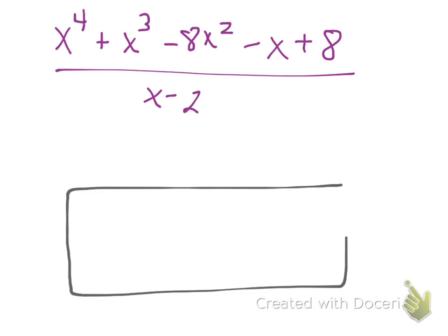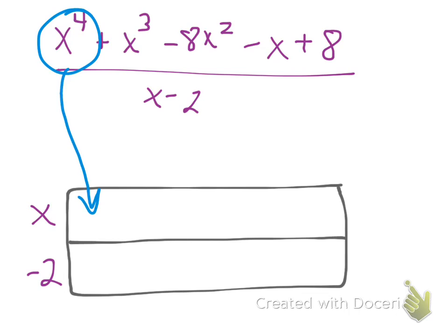Start off with my generic rectangle. What I'm dividing by, x minus 2, is going to go on the side here. And I always start with my first term in that box right there. So x to the 4th. And just like before, x times what gives me x to the 4th, or x to the 4th divided by x. The top of this box has to be x to the 3rd.